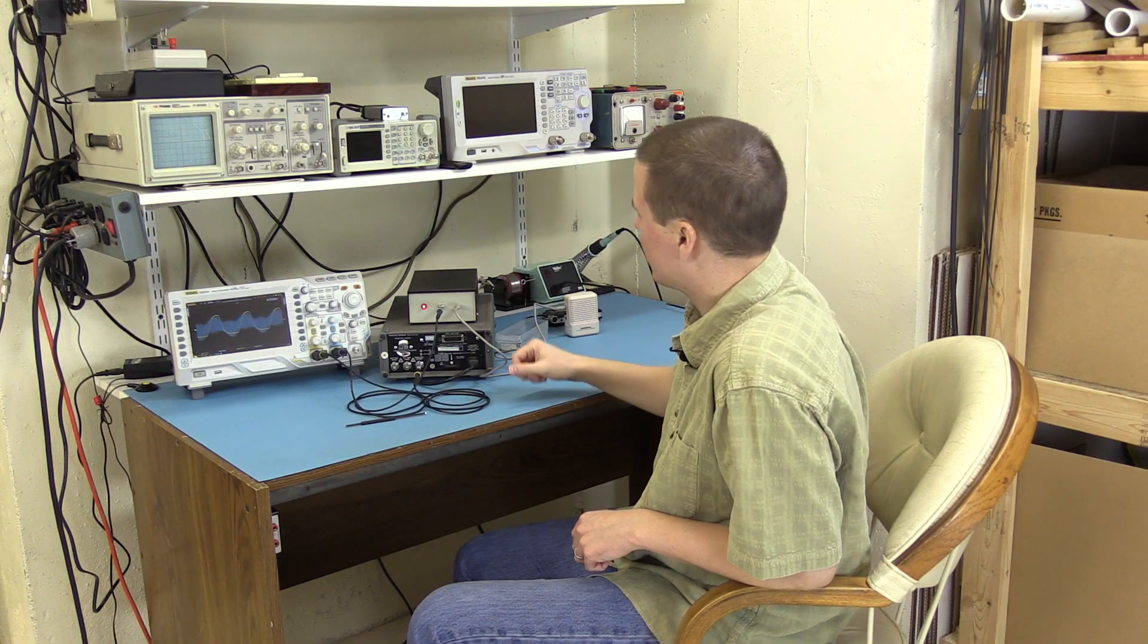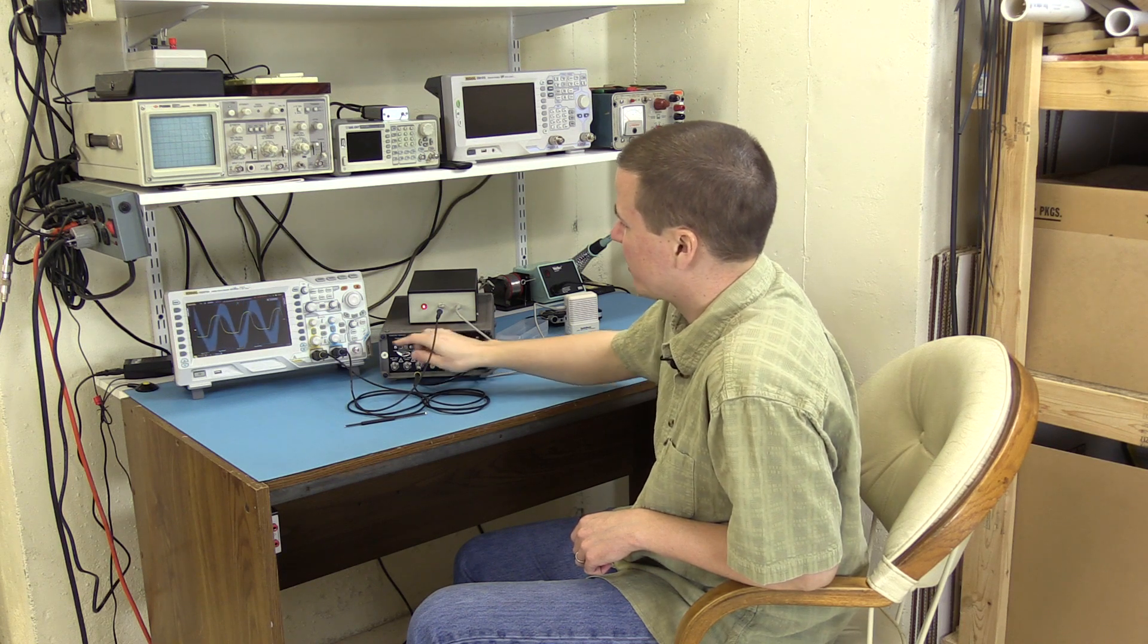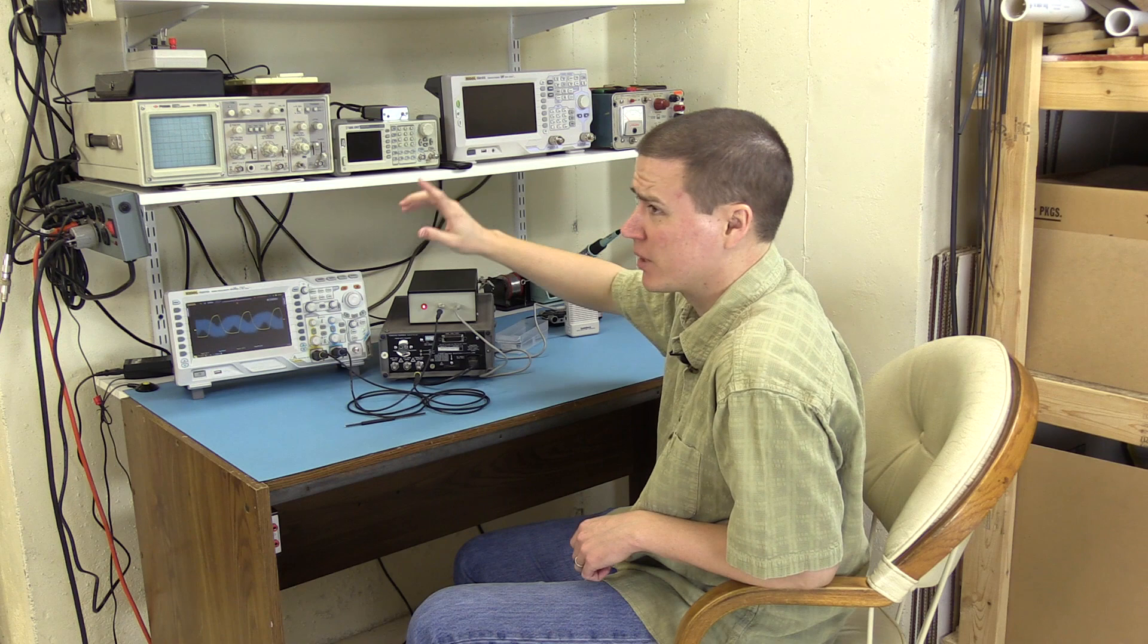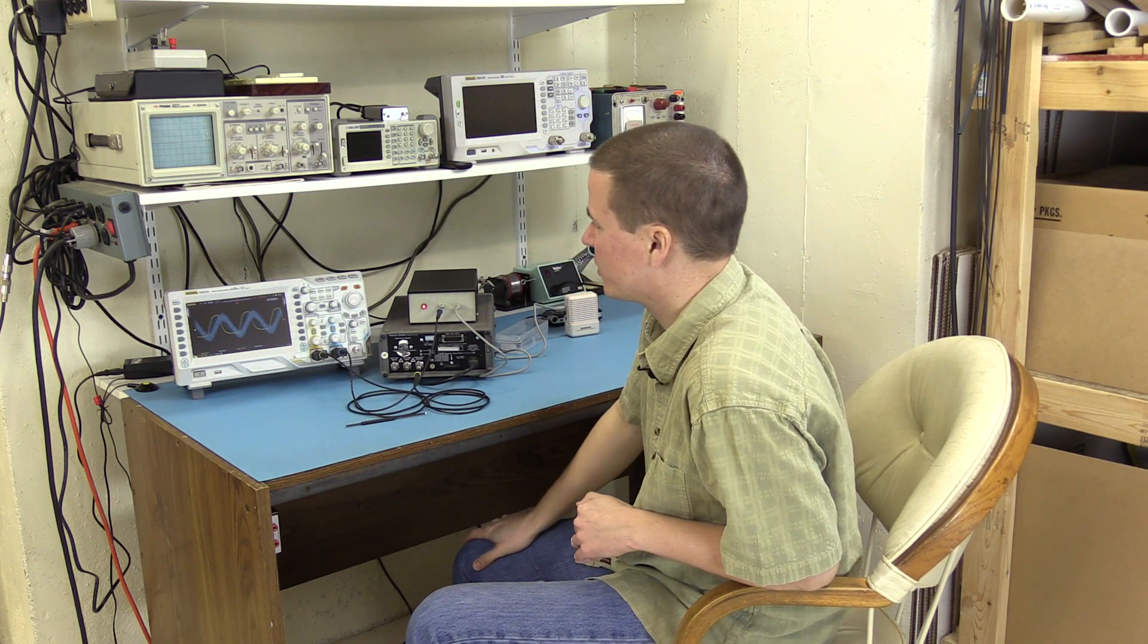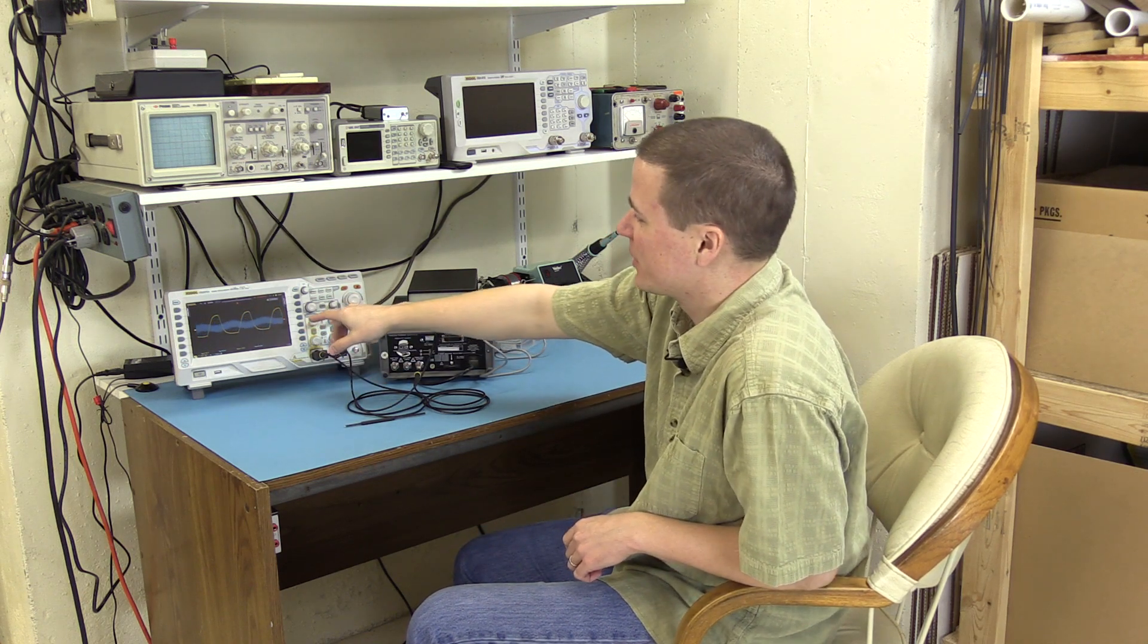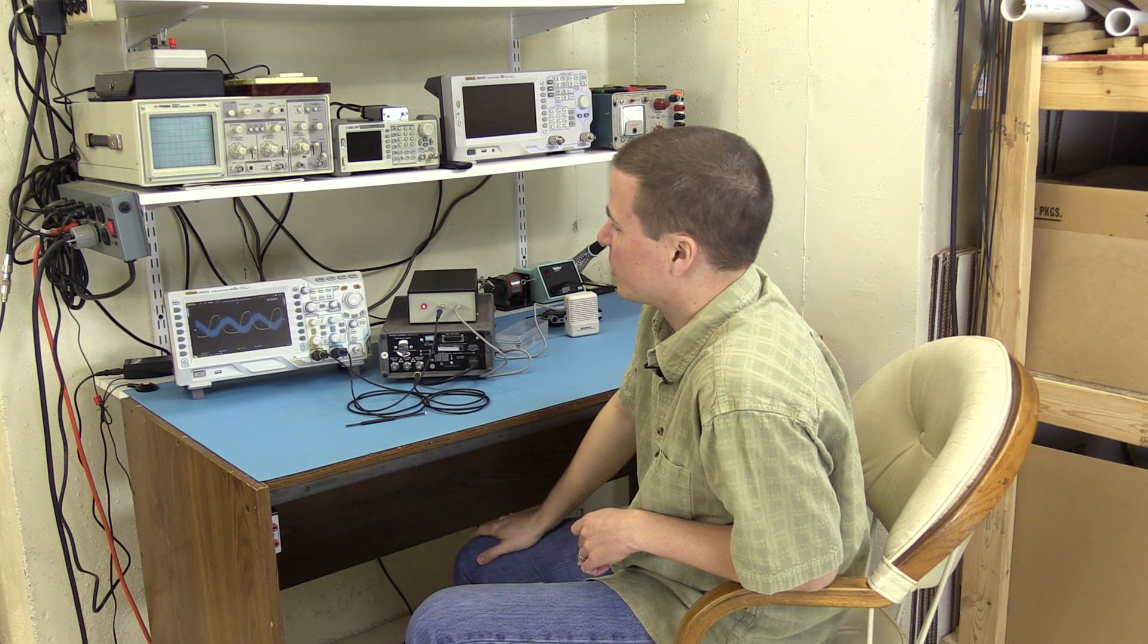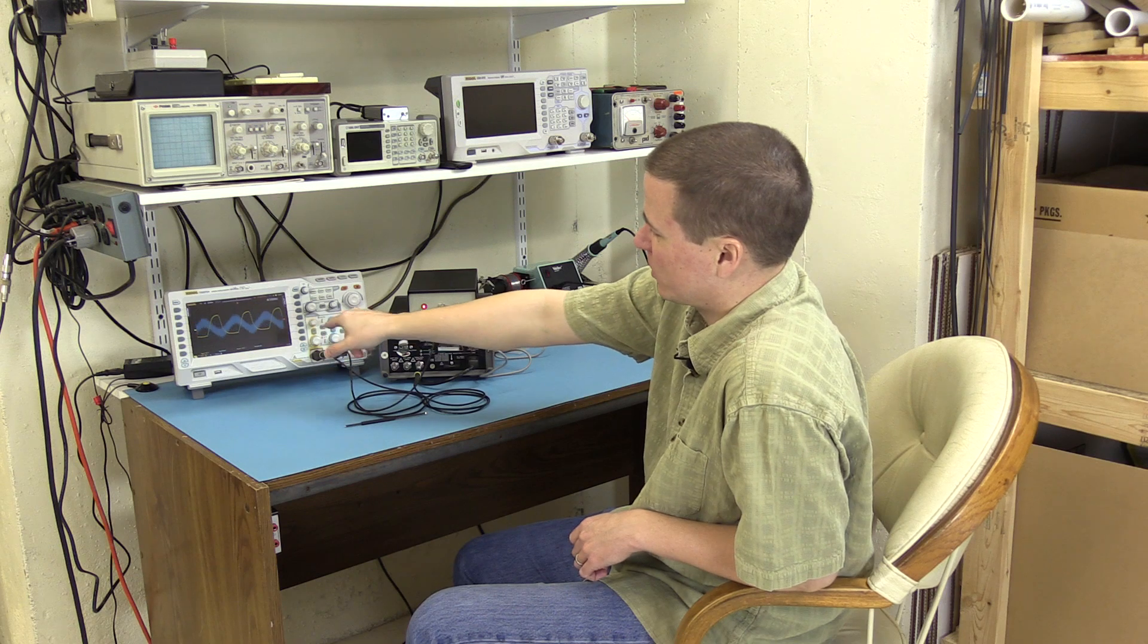I got everything set up. I got the output from the oscillator in the frequency counter here going to channel one, and I'm triggering on that. And then I got the output from the receiver going into channel two. The receiver hooked up to the antenna and a little amplified speaker so we can hear what's going on. And you can see I misadjusted it so we'd have something to do. And so you can see the output from the receiver's not at quite the same frequency as the oscillator in there. So you can see it roll against it.